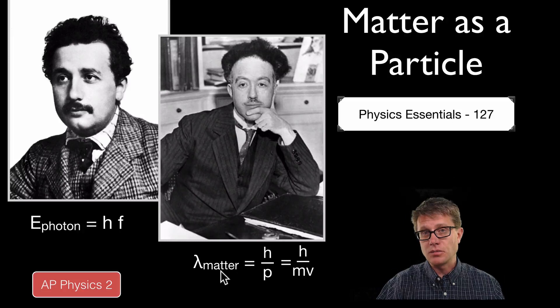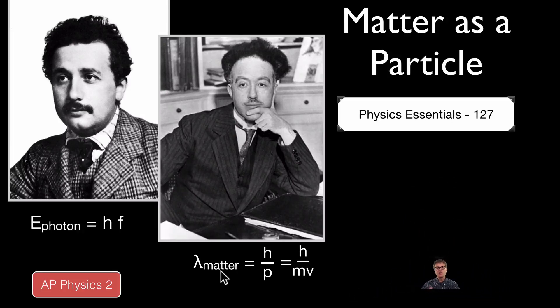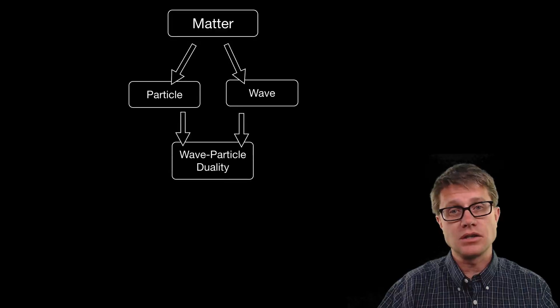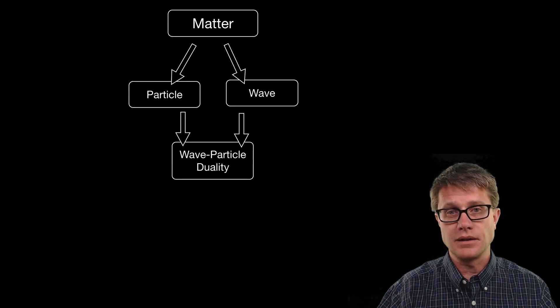But as the mass gets smaller and smaller and smaller what you end up getting is matter acting like a wave. And so we now know that matter is both a particle and a wave. It has, just like light, this wave particle duality.